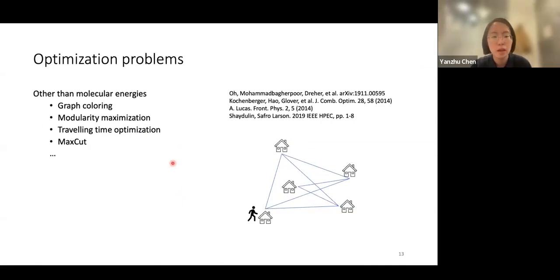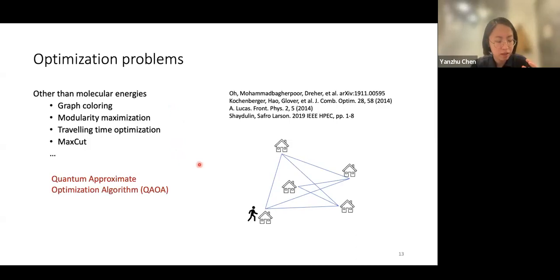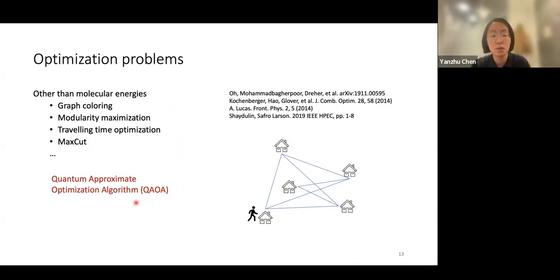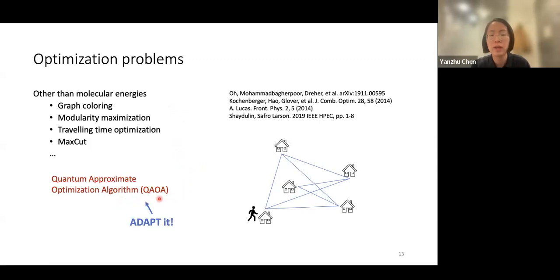Now let me switch gear to classical optimization problems instead of simulating quantum systems. A well-studied quantum optimization algorithm to solve these problems is the Quantum Approximate Optimization Algorithm, or QAOA. I'll briefly introduce it and then show how the adaptive technique can further improve it.